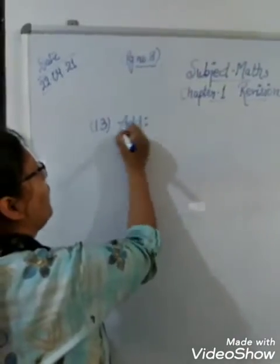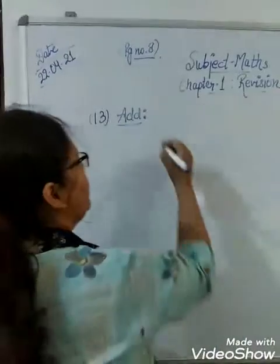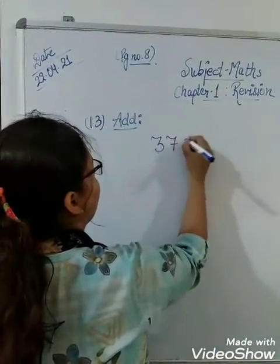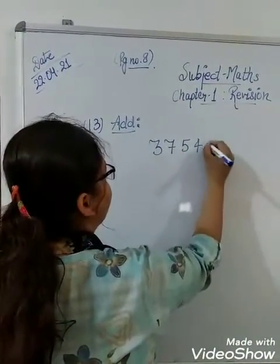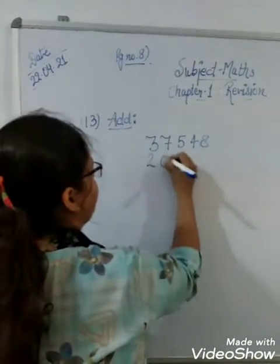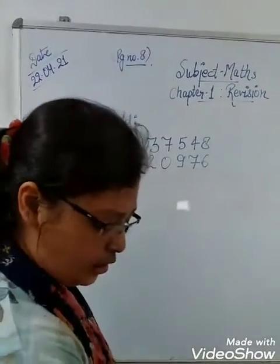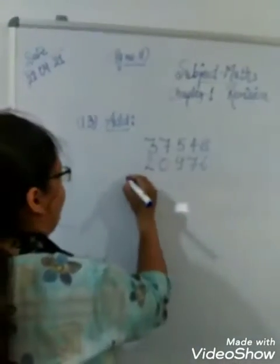So I am just going to do only one example so that the students get aware of it. The numbers given are 47,548, 20,966, and 1,16,390.